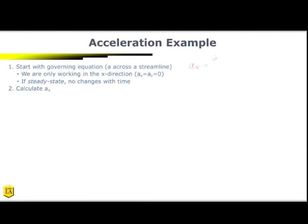So we end up with ax is equal to du/dt plus u du/dx plus v du/dy plus w du/dz. Now we can start crossing things off because this is going to go away, because w is zero. This is going to go away because v is zero. And this is going to go away because we have our steady conditions. So that leaves us with ax is equal to u du/dx.